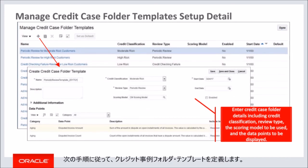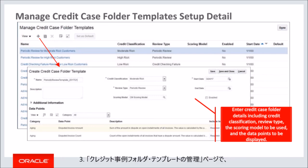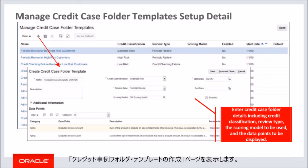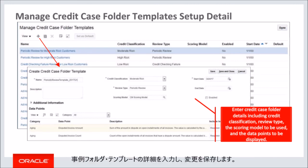Follow these steps to define credit case folder templates. Search for the setup task manage credit case folder templates. On the manage page, click the add icon to go to the create page. On the create credit case folder template page, enter the case folder template details and save the changes.